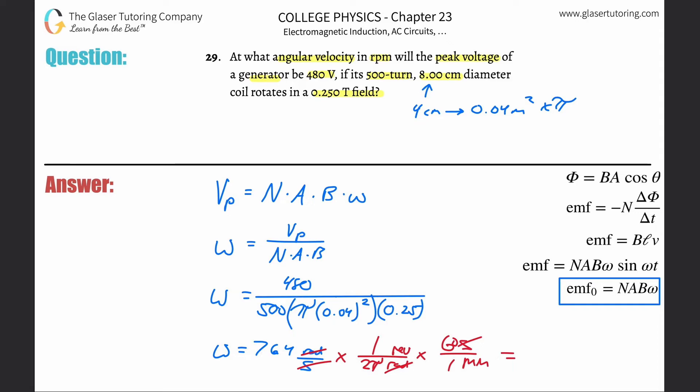So now all we're going to do is we're going to multiply it. That answer that we got multiplied by 60, then divided by parentheses 2 pi. And that works out to be 7.30 times 10 to the third RPM.